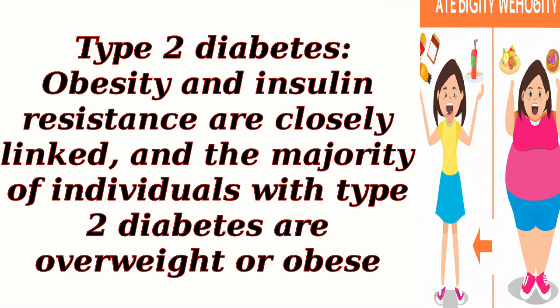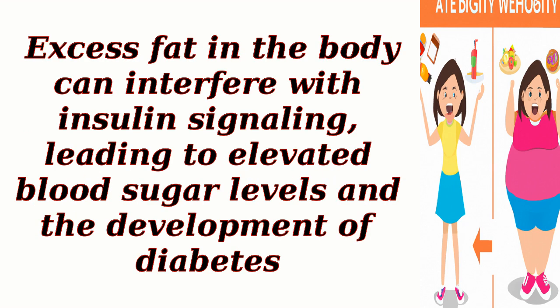Type 2 diabetes: obesity and insulin resistance are closely linked, and the majority of individuals with type 2 diabetes are overweight or obese. Excess fat in the body can interfere with insulin signaling, leading to elevated blood sugar levels and the development of diabetes.